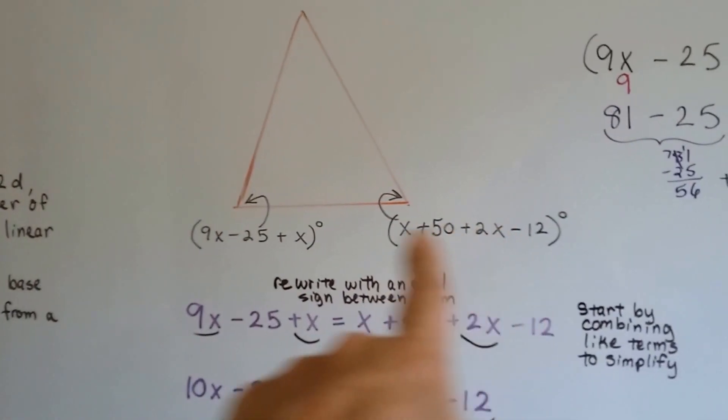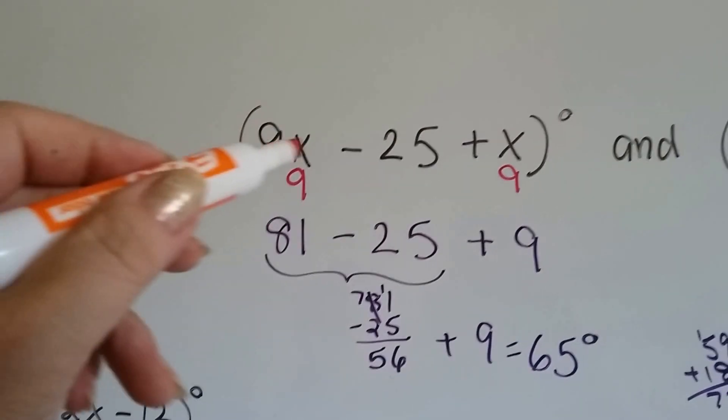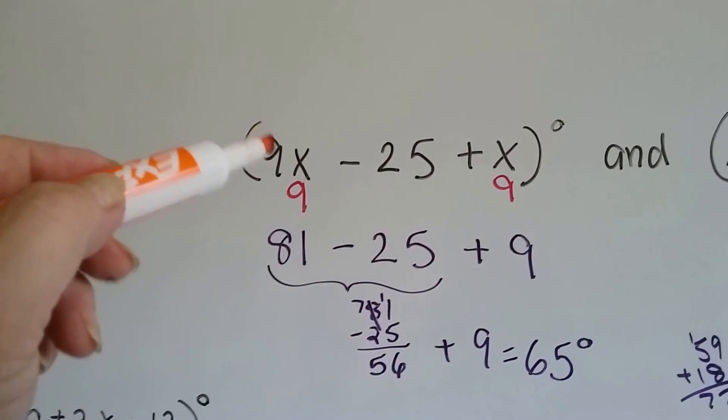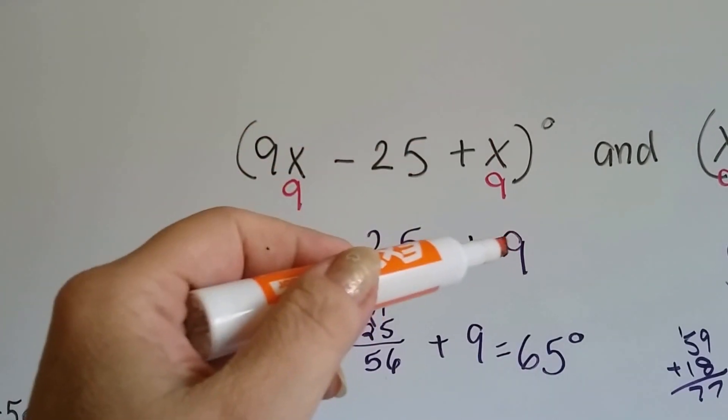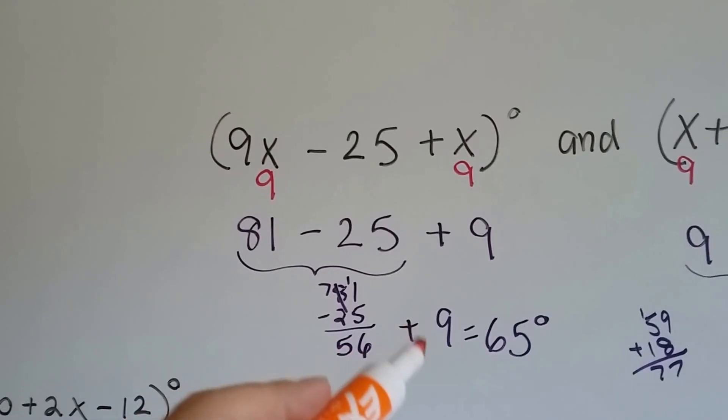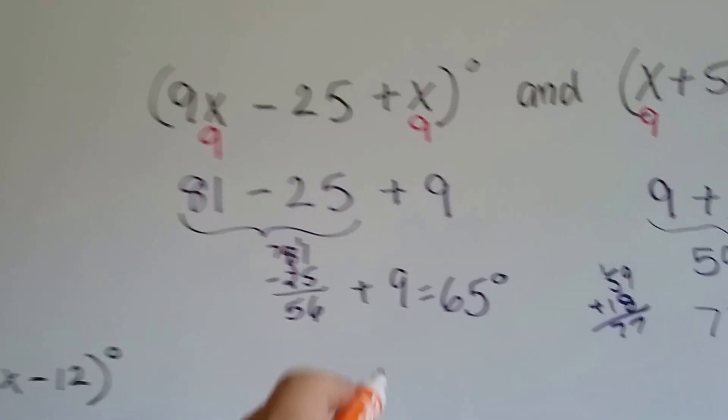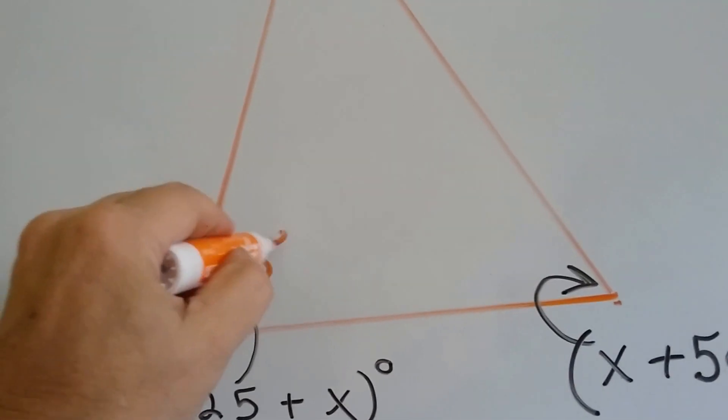So our x is equal to 9. Let's plug it in everywhere that there's an x. So on this side, it was 9x minus 25 plus x, so we've got 9x, that's 9 times 9, that's 81. And at the end here, it's going to be plus 9. Well, 81 minus 25 is 56, plus the 9 is 65. So now we know that's one angle over here. This one is 65 degrees.